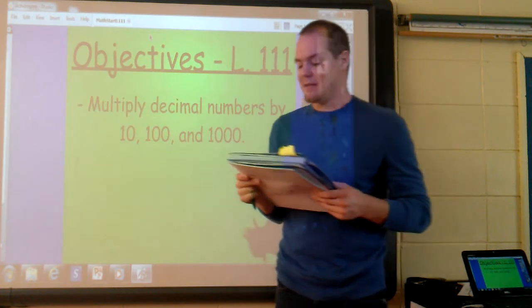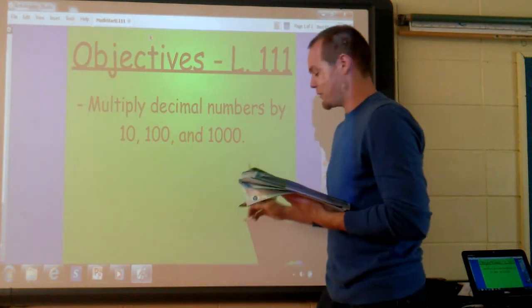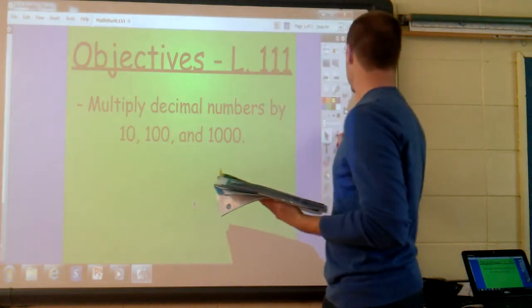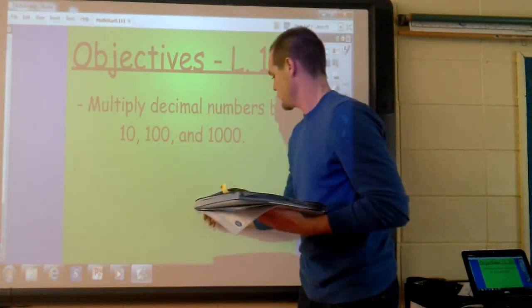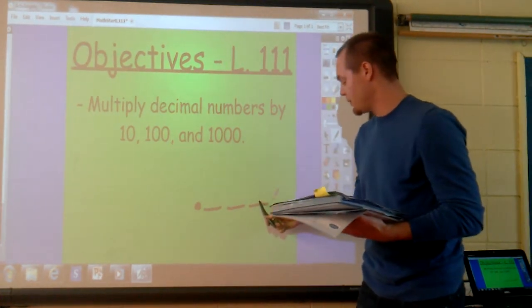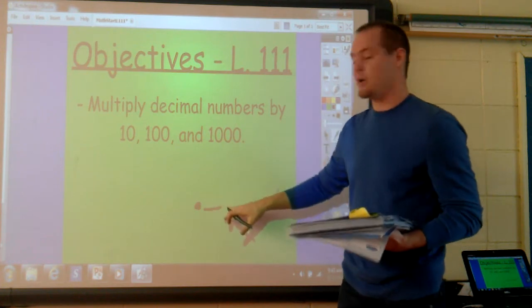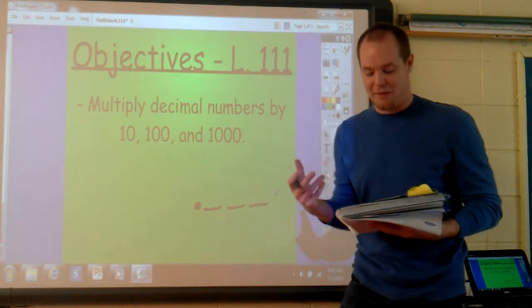The value of each place is 10 times greater each time we move one place to the left. So the 10th, 100th, and 1,000th place, every time you move from a place value to the place value on the left, you basically multiply that number by 10.